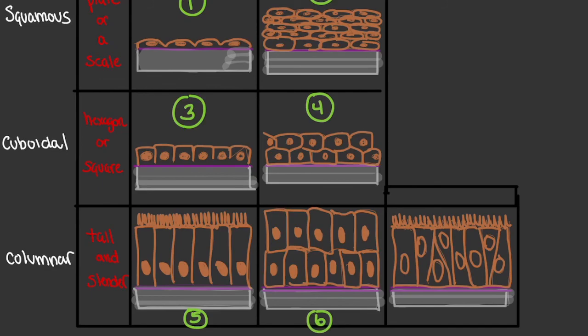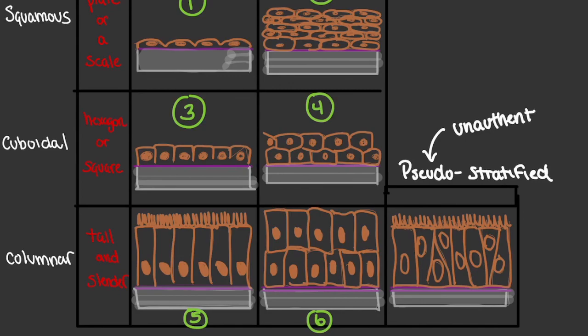This last category is one that's unique on its own: we call this a pseudostratified epithelium. We give it this name because the word pseudo means unauthentic. If we look at this particular tissue sample, it may give the appearance that there are multiple layers when, in fact, there are not — there's just simply one layer, and it happens to be tall and slender in appearance. It is important to note that there are other classification systems for epithelial tissue, but these are the most common ones. Thank you so much for watching this learning support video.